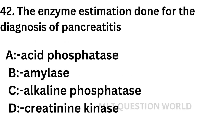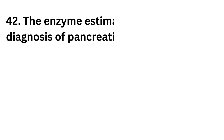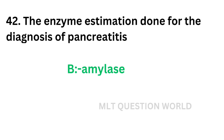Question number 42: The enzyme estimation done for the diagnosis of pancreatitis is — option A: Acid phosphatase, option B: Amylase, option C: Alkaline phosphatase, option D: Creatinine kinase. The correct answer is option B, amylase. The enzyme estimation done for the diagnosis of pancreatitis is pancreatic amylase.